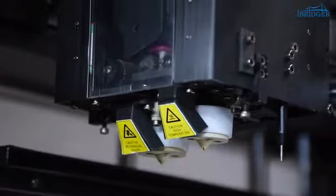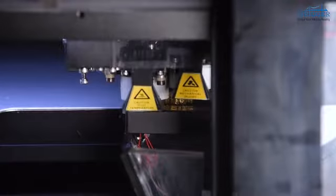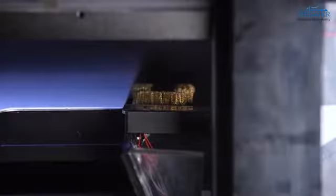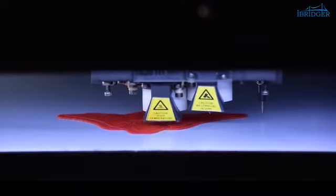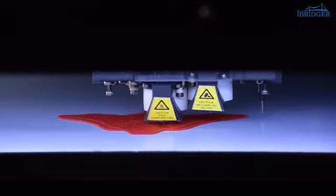With dual extruders, iBridger 3D printer can tackle complex models with desirable support. When two extruders alternate working, iBridger 3D printer will automatically clean nozzles. And the idle nozzle will be lifted 5mm up to avoid scratch or contamination to the print.